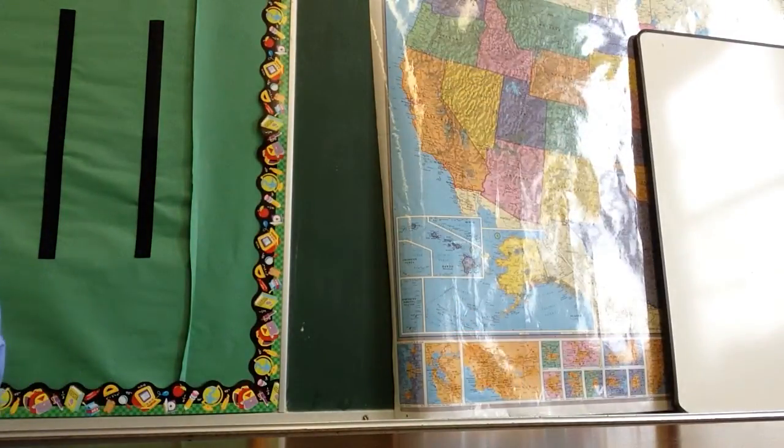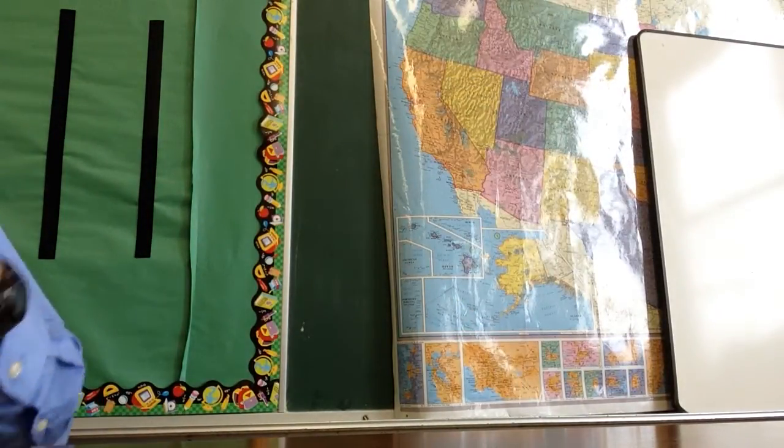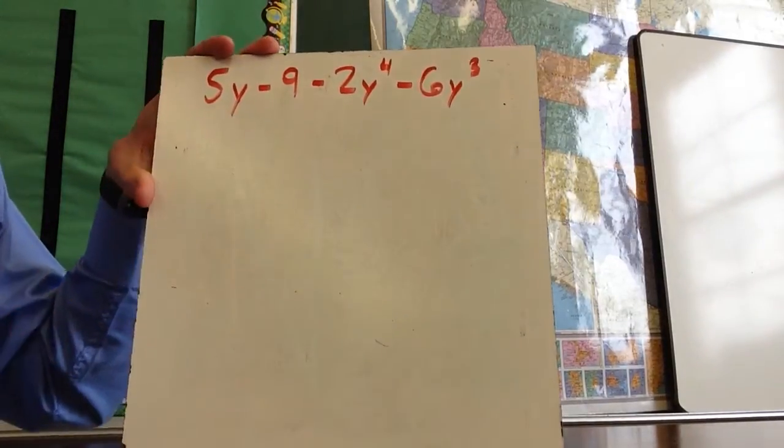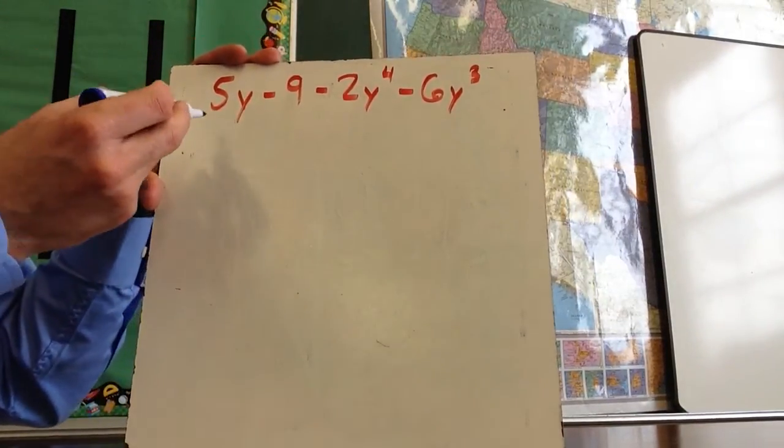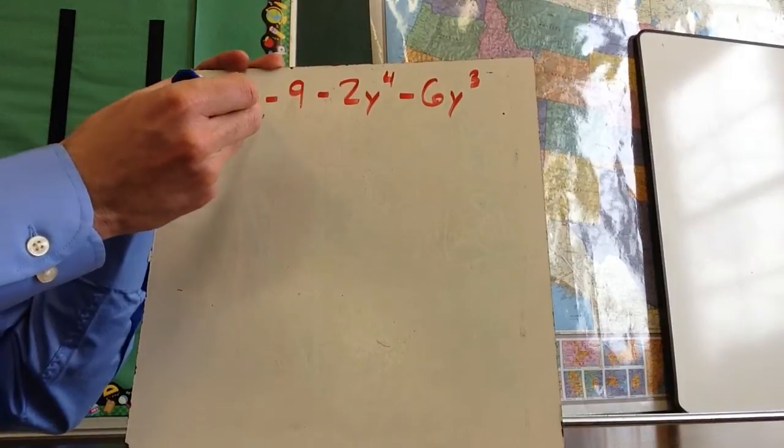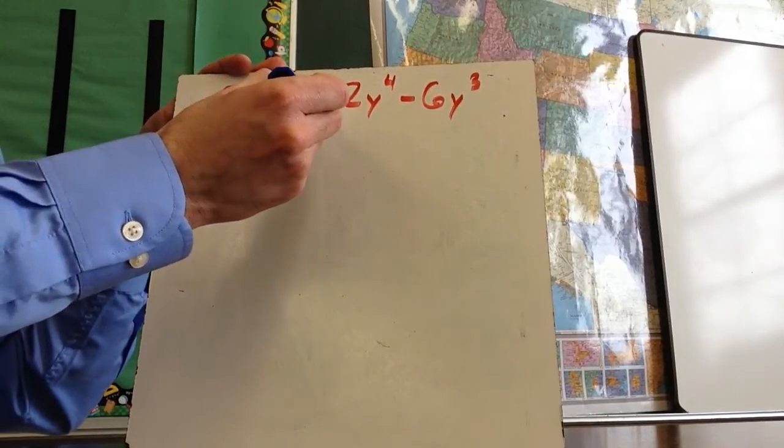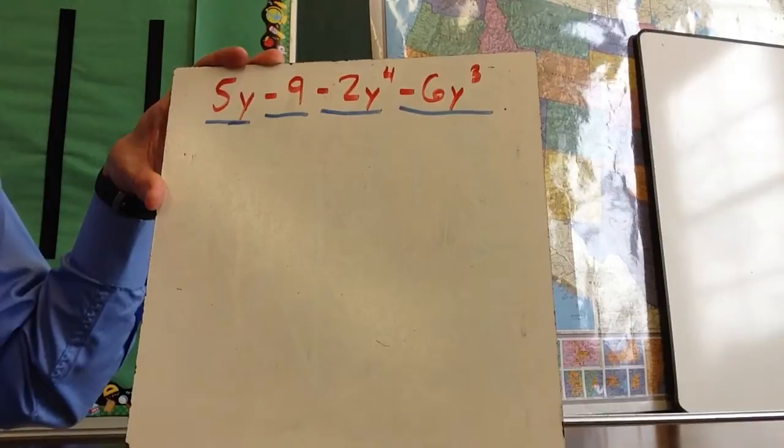Let's take a look at one last example where you're going to have to move some things around. There's a lot of negative signs, so this is a good example for us to practice. So you've got this one, and then this one, this one, and this one. So you've got four terms.